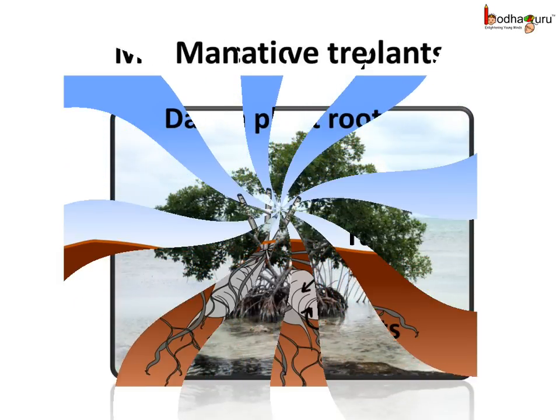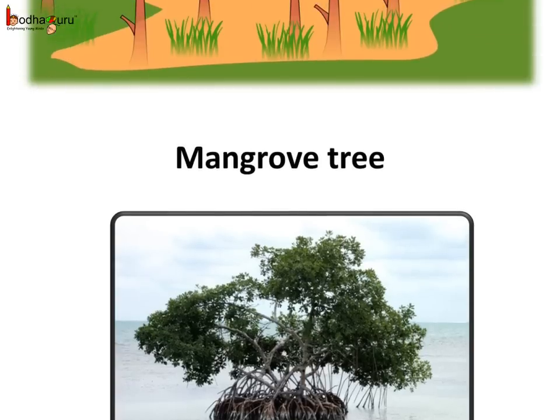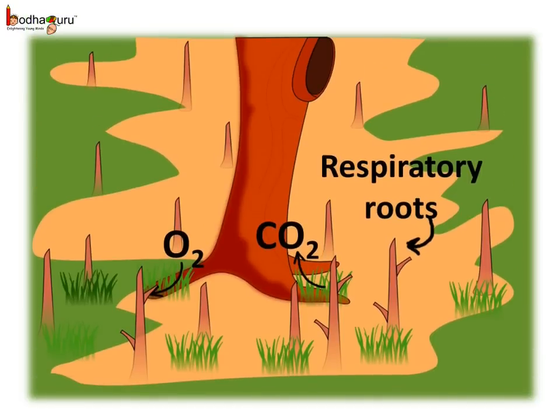This is a mangrove tree. The mangrove trees grow in water-logged soil of the marshy lands that has almost no air. So how do they take in oxygen? In these trees, some branches of the roots grow vertically upward and come out of the ground to get oxygen from the air. These are called the respiratory roots and are used for the exchange of gases.